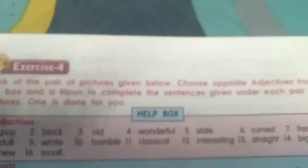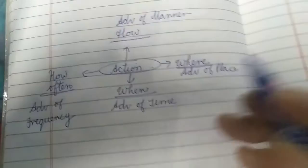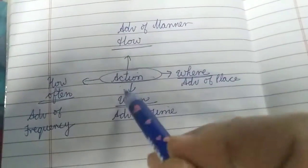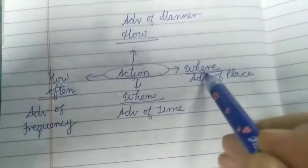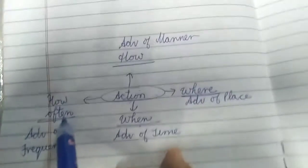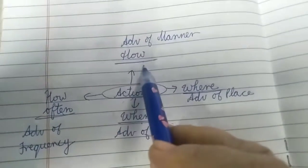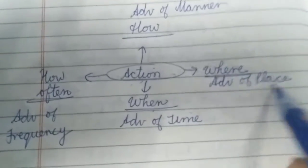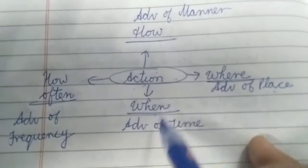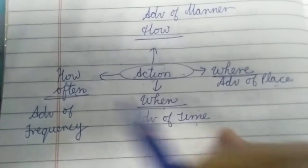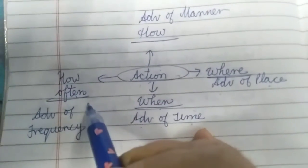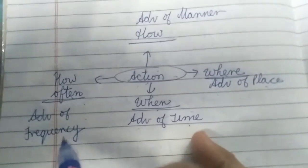Learn all the examples, children. More examples will be given tomorrow. Write down and learn. Adverbs show all the actions: how, where, when, and how often. 'How' is adverb of manner. 'Where' is adverb of place. 'When the action is done' is adverb of time. And 'how often the action is done' is adverb of frequency.